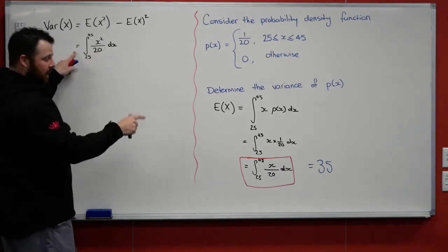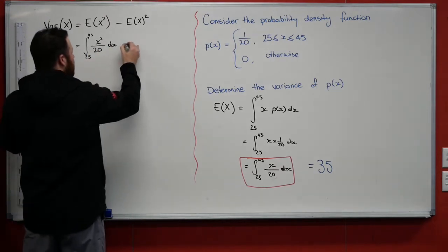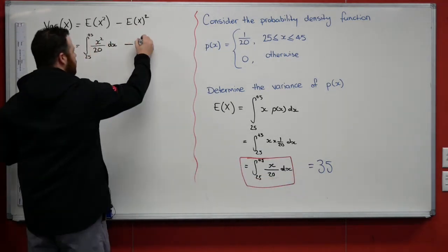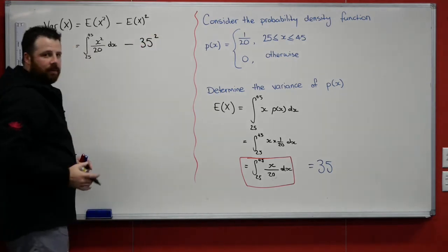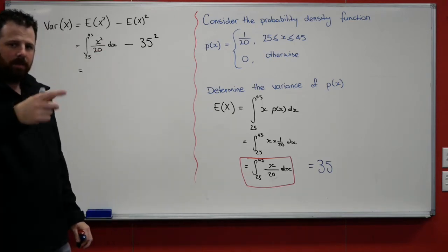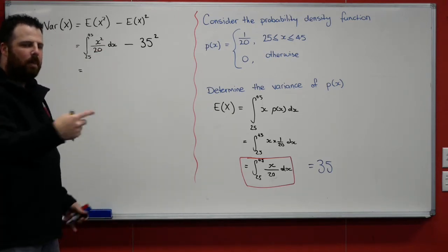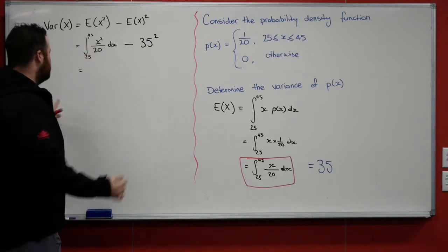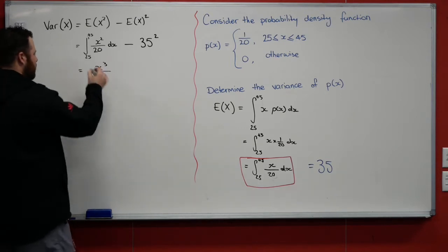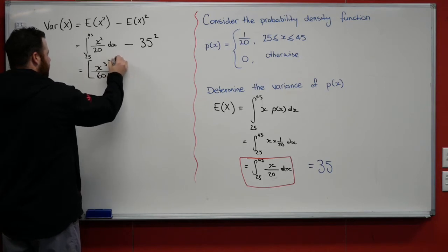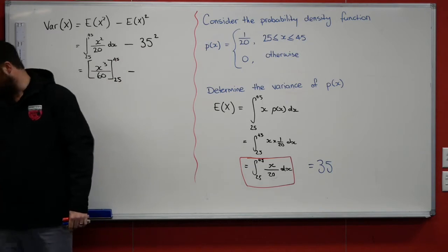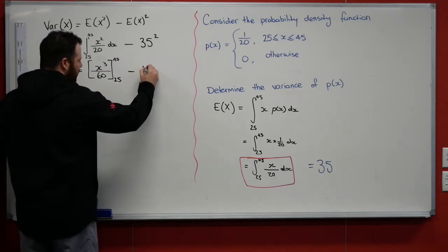So integrating that with respect to x squared minus the expected value squared. And our expected value was 35. So we're going to subtract 35 squared. Going through that, the integral of x squared/20, add 1 to the power becomes x cubed multiplied by 1/3. So then 1/3 on 20. So we're going to have x cubed/60, 20 times 3 is 60. Evaluate that between 45 and 25. And we're going to subtract 35 squared, which is 1,225.